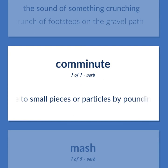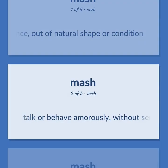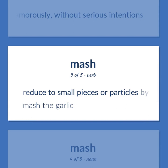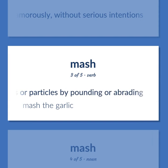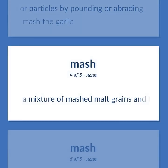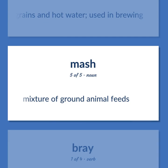Grind: to reduce to small pieces or particles by pounding or abrading. Crush: to compress with violence out of natural shape or condition. Mash: to reduce to small pieces or particles by pounding or abrading — mash the garlic. Also: a mixture of mashed malt grains and hot water used in brewing; mixture of ground animal feeds.